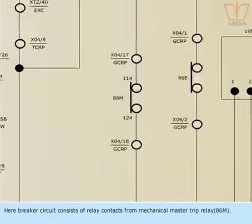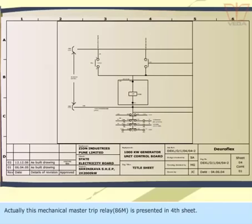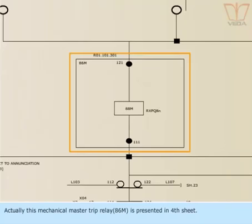Here, breaker circuit consists of relay contacts from mechanical master trip relay 86M. Actually, this mechanical master trip relay 86M is presented in fourth sheet.